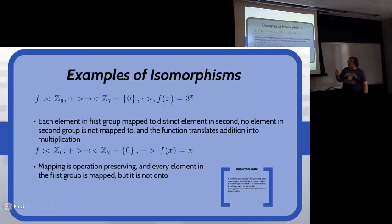An example would be f from Z6 under addition to Z7 minus 0 under multiplication, where f(x) = 3^x. Each element maps to a discrete single element. No element in either group is not mapped to, and our function translates addition into multiplication. So we have all the requirements for an isomorphism.